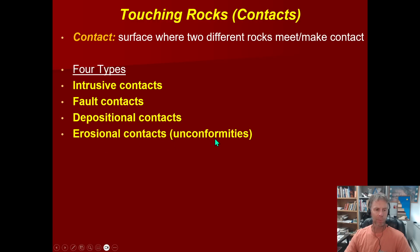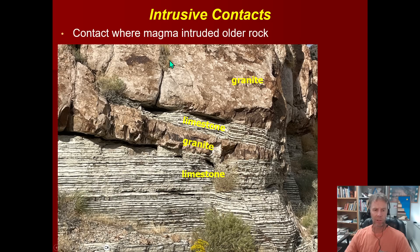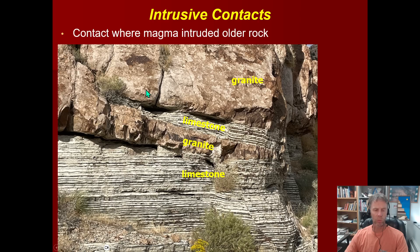Then we'll spend most of our time digging into erosional contacts, which are also called unconformities. Here is the first type: an intrusive contact where magma has intruded other types of rocks, then cools and crystallizes underground. This photo, taken in western Utah near Notch Peak, shows banded limestones that have been intruded by magma, which has now cooled and crystallized into granite. Notice that this intrusive contact can be a little irregular — it might be parallel to the layering, or it may cut across it.